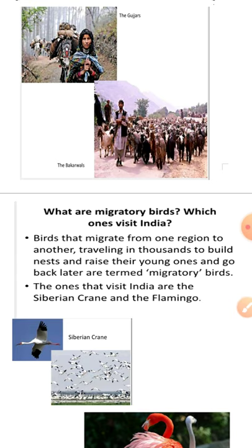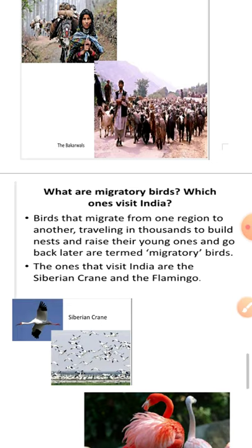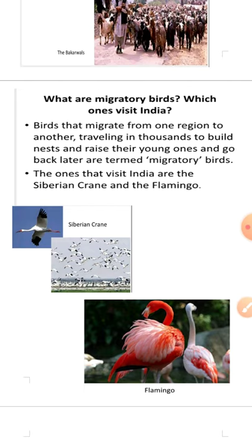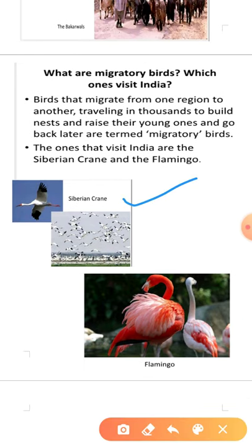Another important topic is migratory birds, which visit different forests at different times of the year. Migratory birds are birds that migrate from one region to another, traveling thousands of kilometers to build nests and raise their young, then go back later. Two important migratory birds that come to India are the Siberian crane and the flamingo.